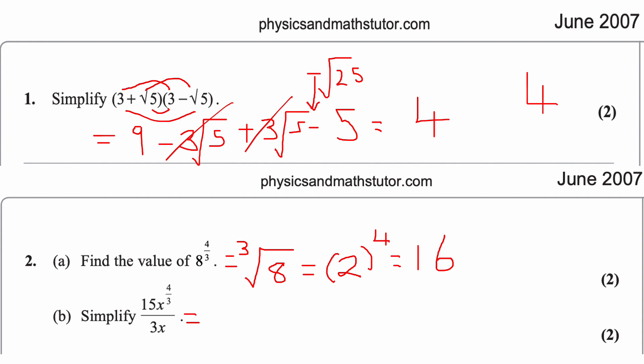Next part: simplify 15x^(4/3) ÷ 3x. 15 ÷ 3 = 5. For the x terms, x^(4/3) ÷ x^1 = x^(4/3 − 1) = x^(4/3 − 3/3) = x^(1/3). So the answer is 5x^(1/3).